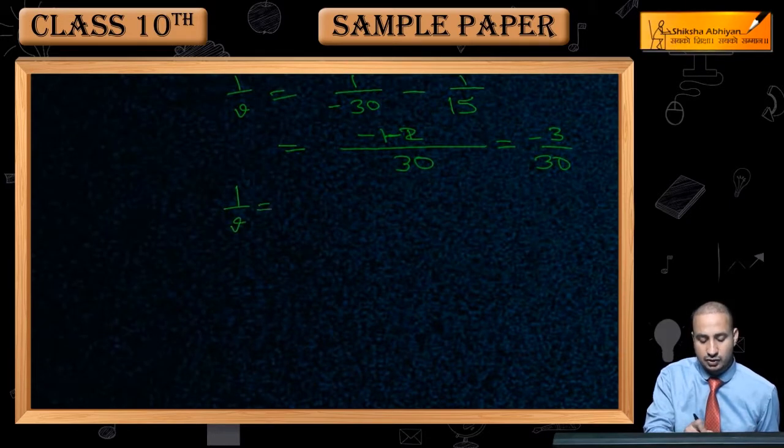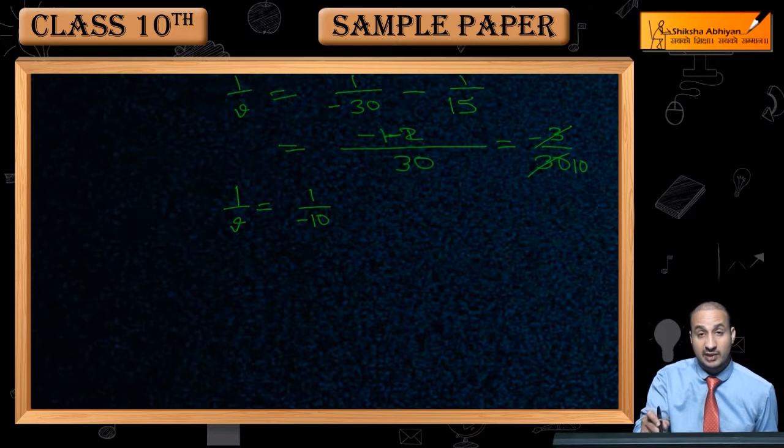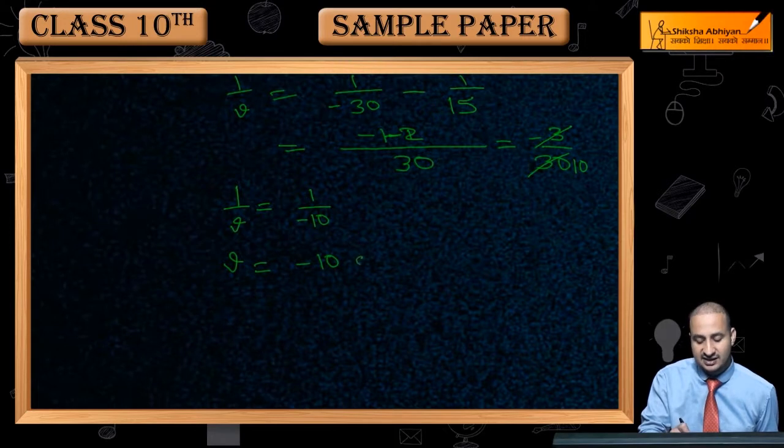Finally, 1 upon v is minus 1 by 10. If I cancel out, minus goes from numerator to denominator. So v is equal to minus 10 cm.